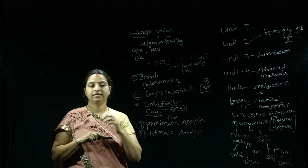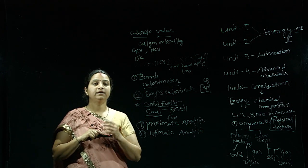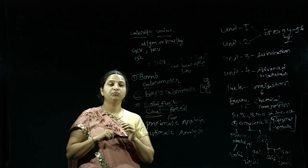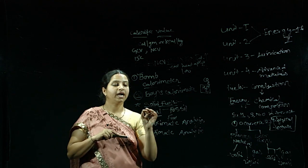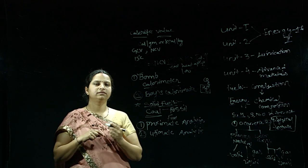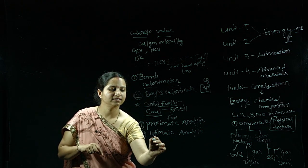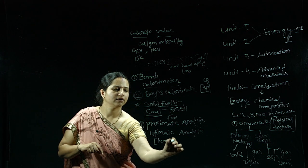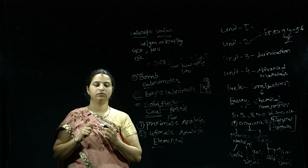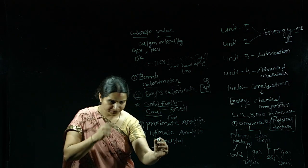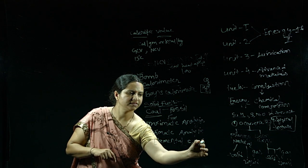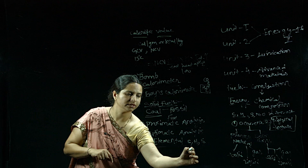Ultimate analysis is the analysis in which we find the percentage of carbon, hydrogen, sulfur, nitrogen, and oxygen. We can also call it elemental analysis of coal, because we find out the percentage of each element — carbon, hydrogen, sulfur, and nitrogen.